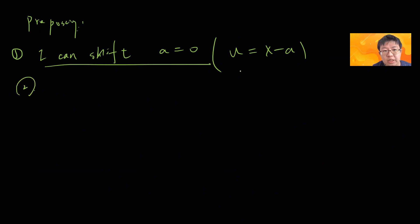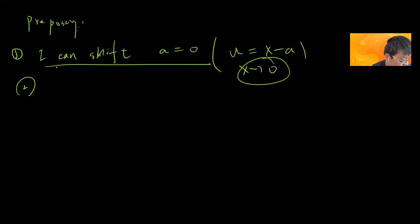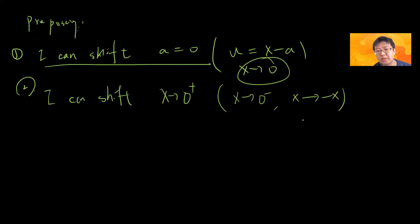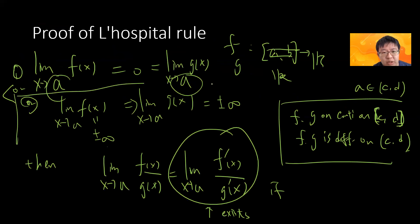Not only that, I can also assume x → 0⁺. The reason is that if x → 0⁻, I just let x = −x and do another change of variable. So one can prove the right-hand limit case, and the left-hand case follows the same way.